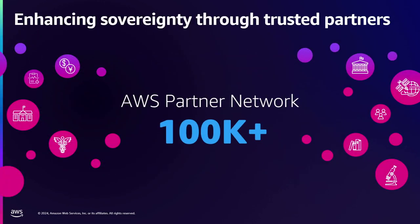Partners play a big role in the ecosystem. There are several ways partners can help with European Sovereign Cloud — be it building sovereign solutions on the platform or helping customers navigate workload assessments and migrations. I'd recommend working closely with your partners to figure out what digital sovereignty competencies they have and working your way with AWS on that.